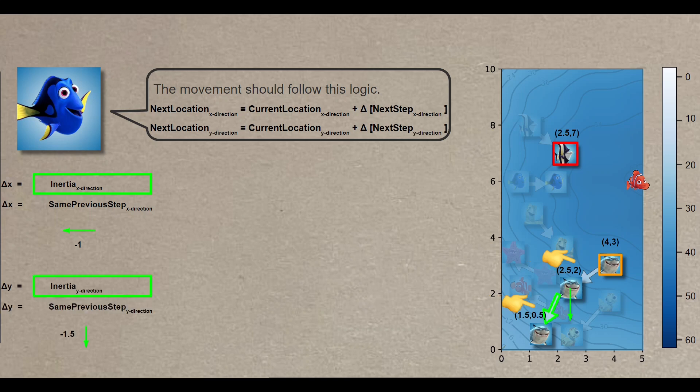Likewise, in the y direction, it's a step and a half downwards. 0.5 minus 2. The second component in the delta x is what's referred to as personal influence, highlighted in orange here. This signifies that your upcoming step should be adjusted toward the best location you've ever achieved, the orange square.